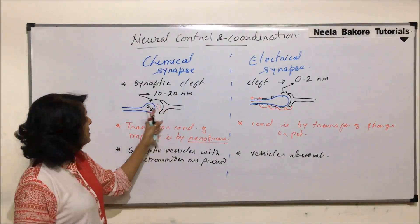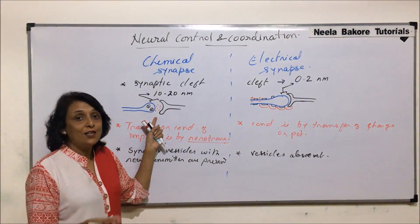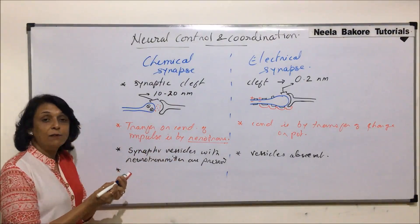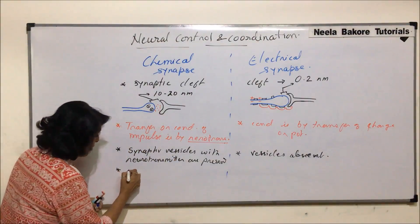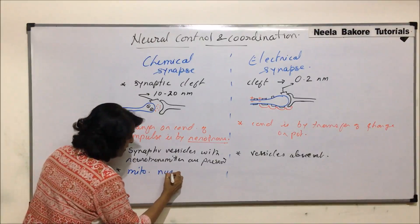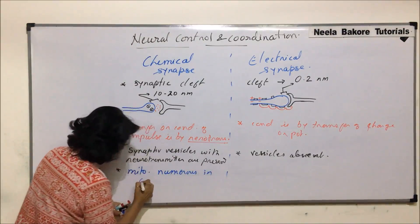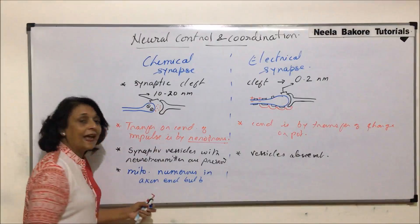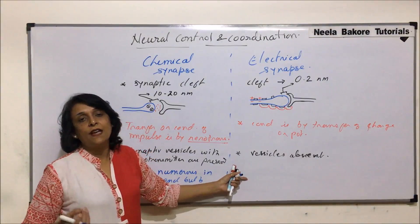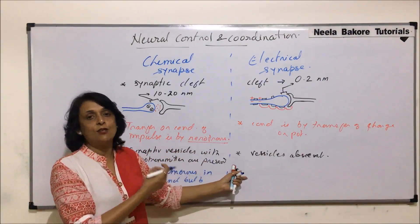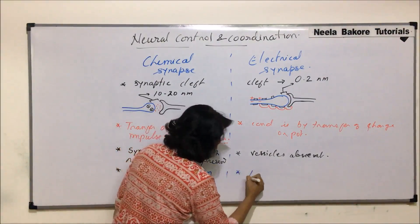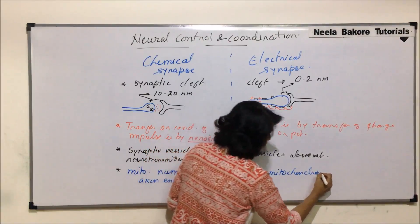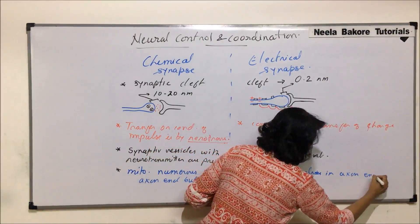In chemical synapse, because the vesicles have to rupture, calcium ions must enter, and ATP is required. That is why mitochondria are numerous in the axon end bulb of chemical synapses. In electrical synapse, calcium channels and those processes are not required, so mitochondria are few in number in the axon end bulb.